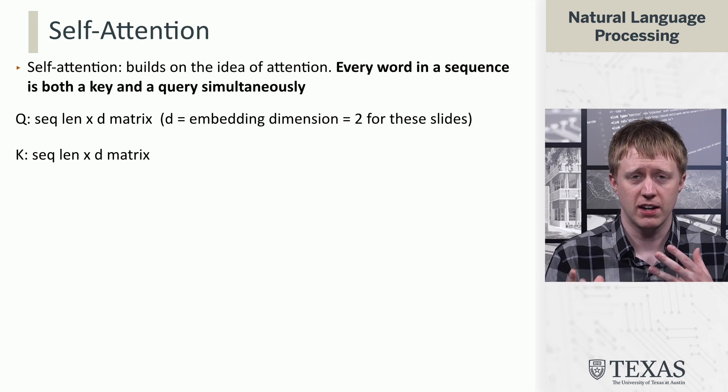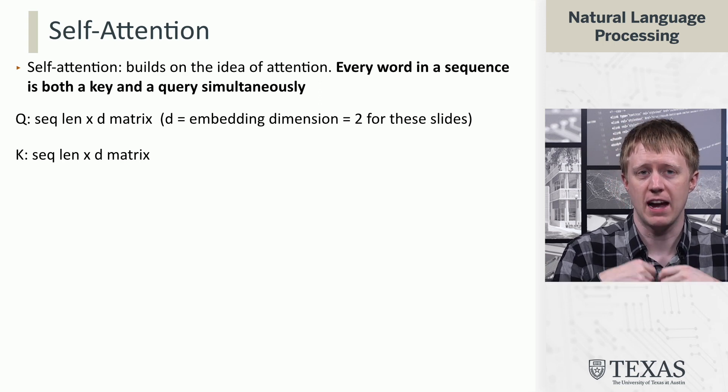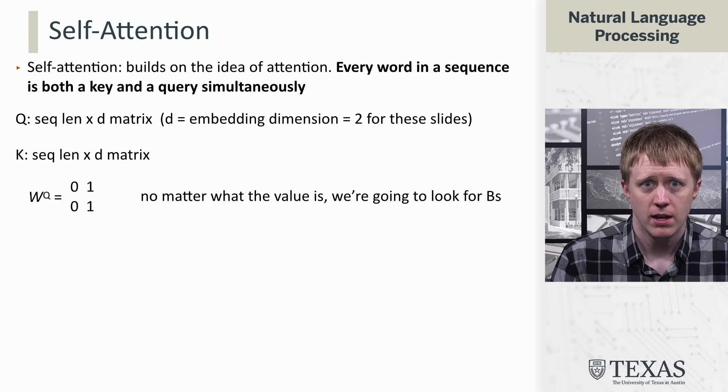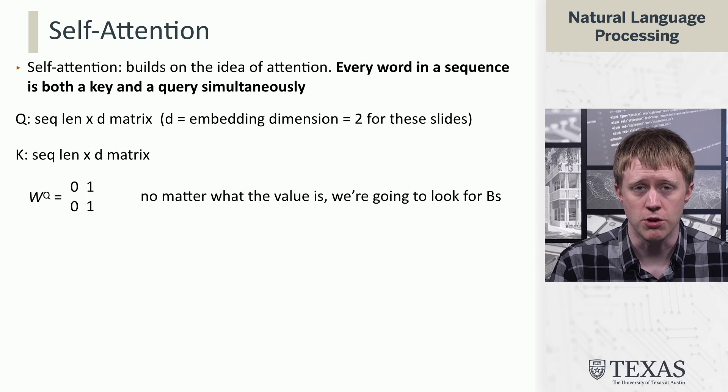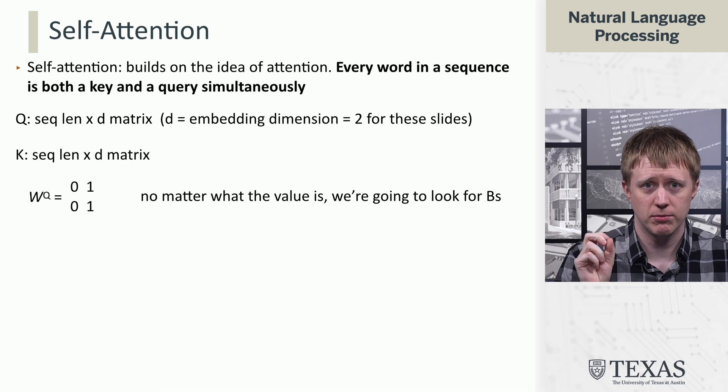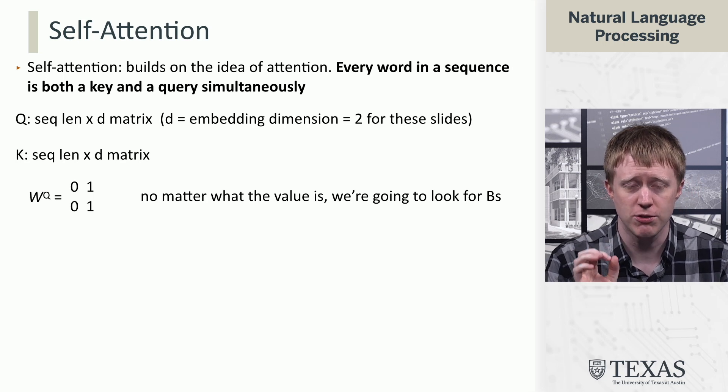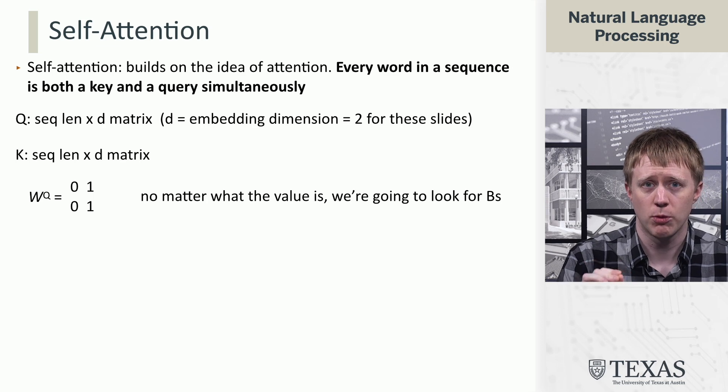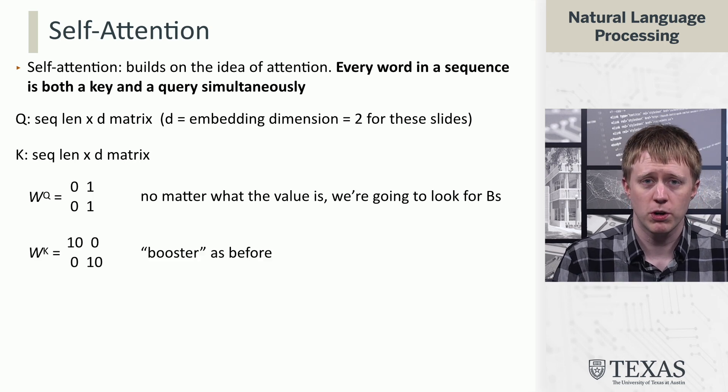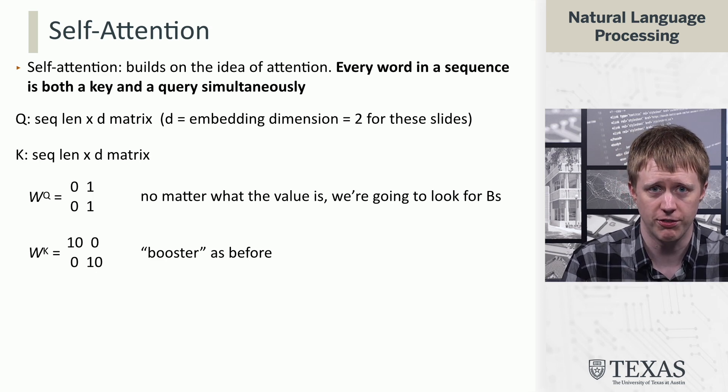In order to represent the fact that what we're looking for and what each token is are not the same thing, we're going to multiply these by matrices to transform them. We're going to set up a matrix WQ that we're going to multiply Q by, which will have 0, 1 in both rows. This tells us that no matter what the value of this particular token is, we're going to look for Bs, which correspond to the second position in our vector space. We're going to use this WK diagonal matrix that boosts the scale of the embeddings.